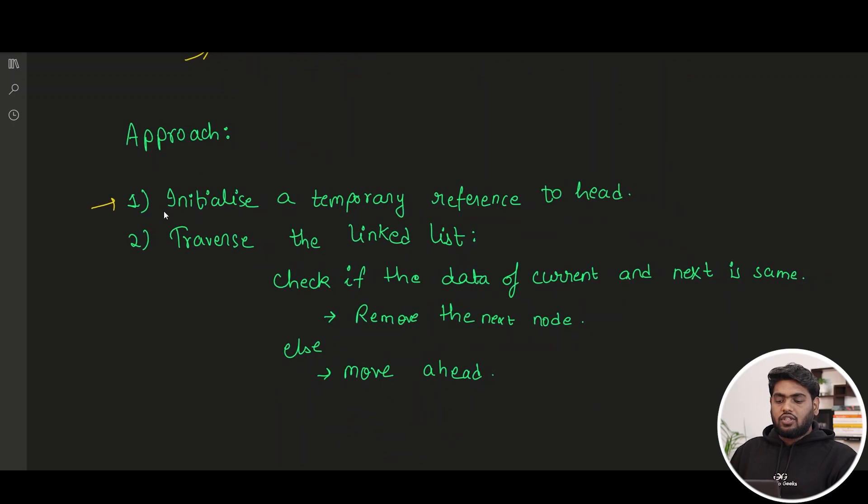What do we have to do? We have to initialize a temporary reference to the head just for your basic traversal of the linked list. Then when we have to traverse the linked list, we have to continuously check that the data of the current element and of the next element is same. If that is true, then we have to remove the next node. And if it is not, then we have to move ahead.